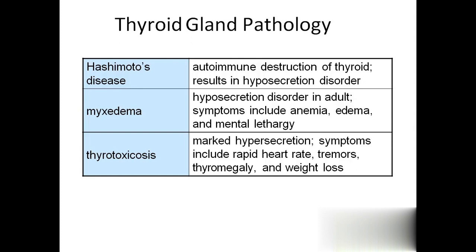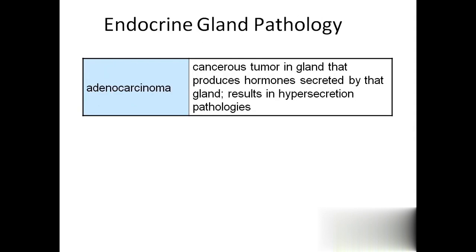Thyrotoxicosis: because of excessive secretion of thyroid hormones, the person will have increased heart rate, tremors, thyromegaly, and weight loss. Adenocarcinoma is cancer of a gland - if any gland has cancer, there will be excessive secretion of non-functional hormone, which leads to pathologies.